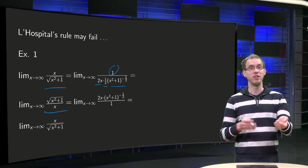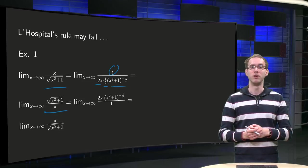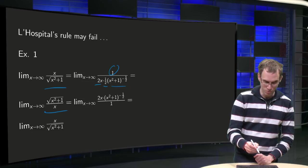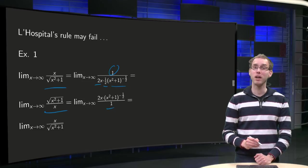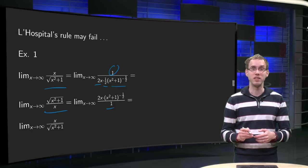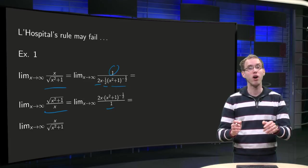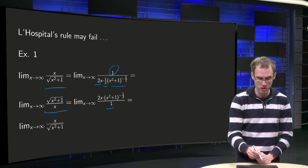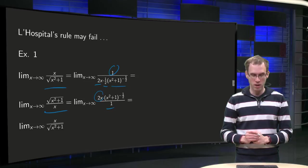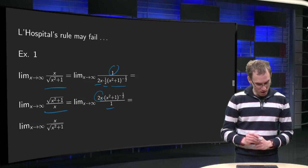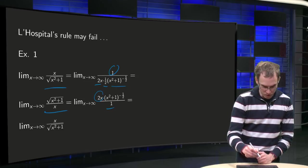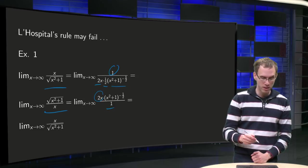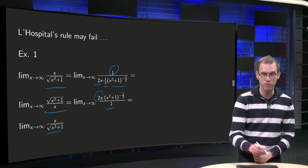And again, we have infinity over infinity. Well, no problem, just try to apply L'Hôpital's rule again. So we get 1 in the denominator, and differentiate the numerator: rubbish to the power 1 half, 1 half times the rubbish to the power minus 1 half times chain rule 2x, and there we are.